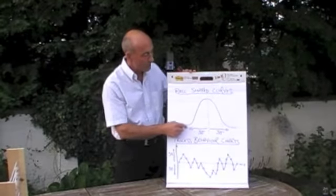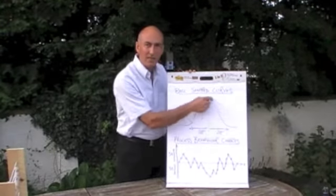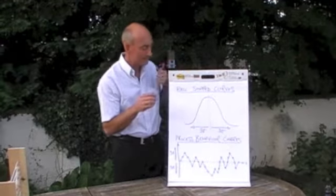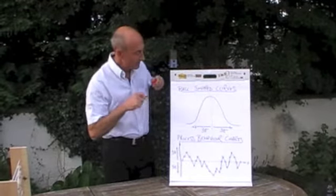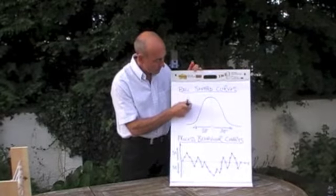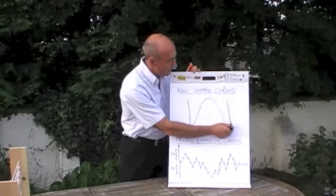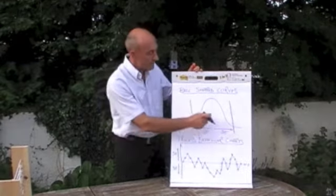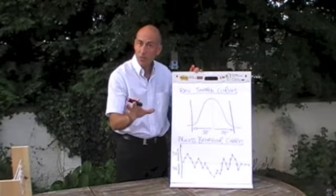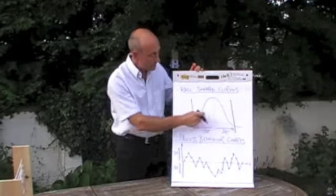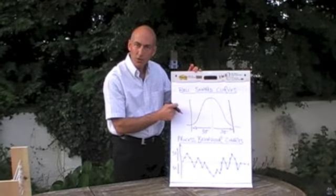Now we know that bell-shaped curves are a snapshot in time of the variation in the process. We also know that if we get 3 sigma either side of the centre line, then everything that's inside the bell-shaped curve is common cause, and everything that's outside is special cause.